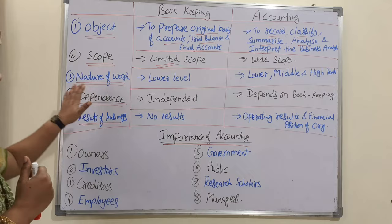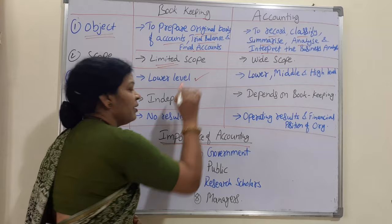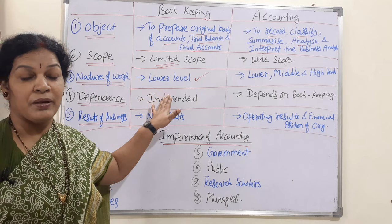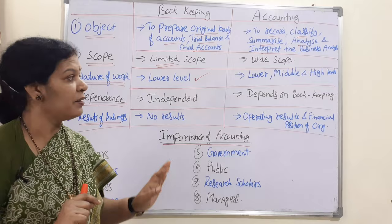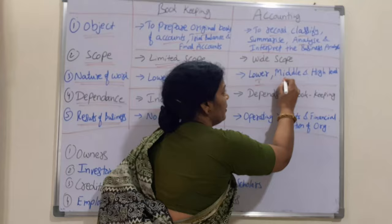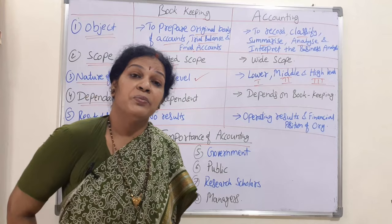The third difference is the nature of work. In bookkeeping, lower-level clerical work is done — lower-level management, lower-level clerical people maintain bookkeeping. Whereas in accounting, three levels are found: lower, middle, and high level — three levels of accountants work there.